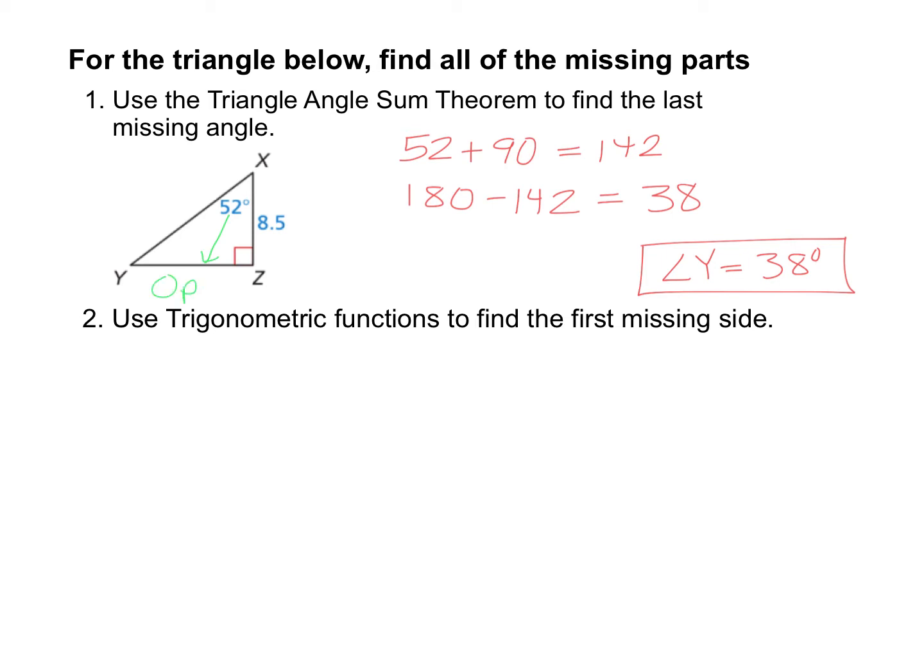YZ is across from it, so that's the opposite. The hypotenuse is YX, which is across from the 90. And the 8.5, the only side left, is the adjacent.